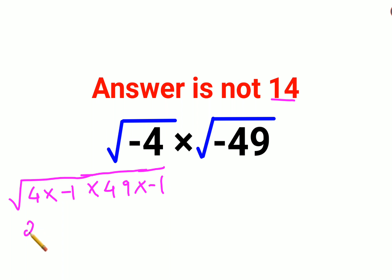so you take it out of the root, it comes 2. As well as 49 is also a perfect square, you take it out of the root, it becomes 7. And then you are just left with √(-1)×√(-1).